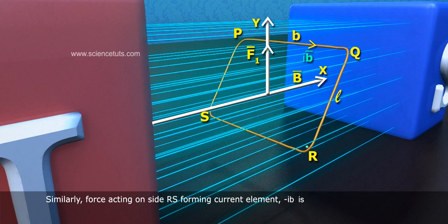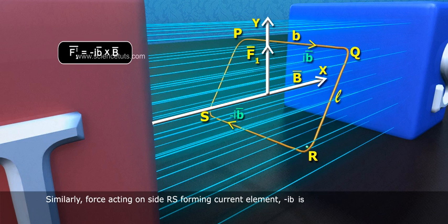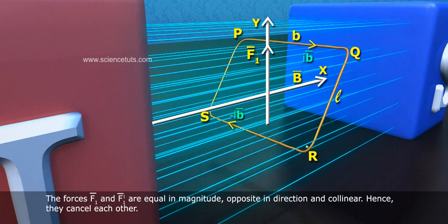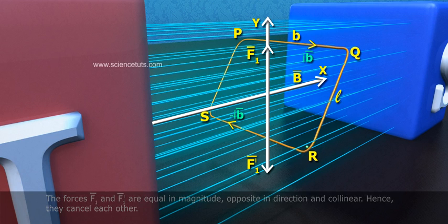Similarly, force acting on side RS forming current element minus IB bar is F1 dash bar equals to minus IB bar cross B bar. The forces F1 bar and F1 dash bar are equal in magnitude, opposite in direction and collinear. Hence, they cancel each other.